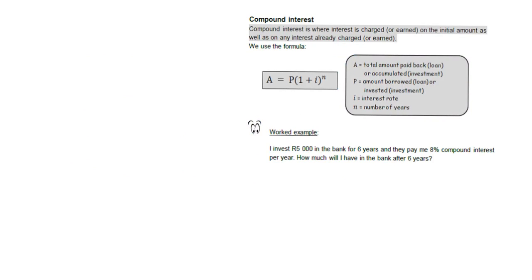It gets tedious to work out compound interest year by year, so there's a shortcut formula. To get the accumulated amount (A), take the initial amount (P) and multiply it by (1 plus the interest rate) to the power of the number of years: A = P(1 + i)^n. For each year that goes by you're getting interest on the growing total.